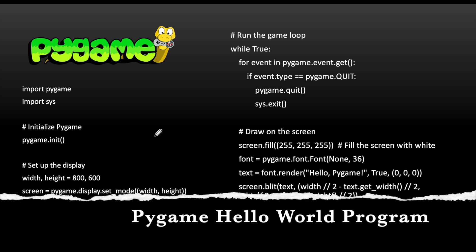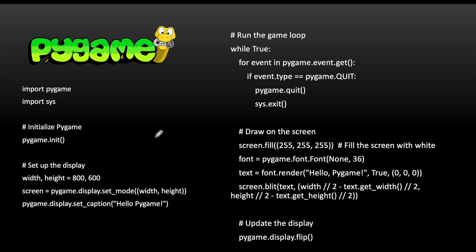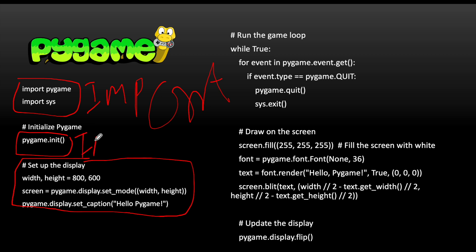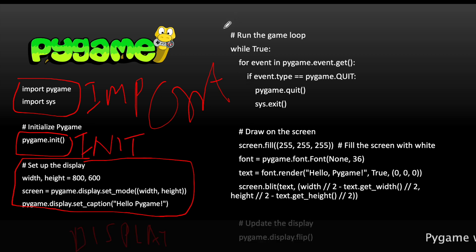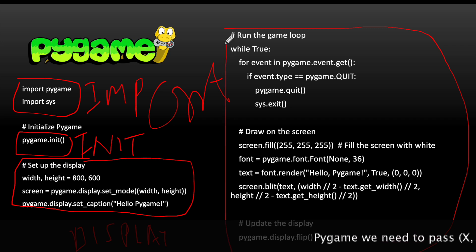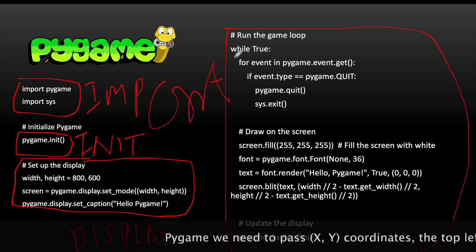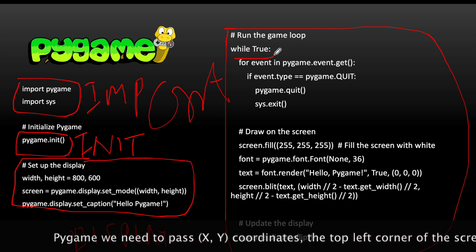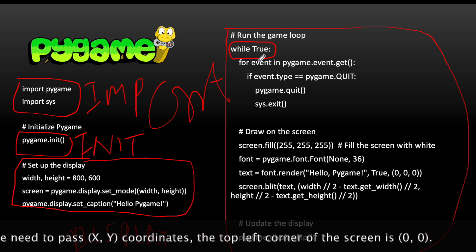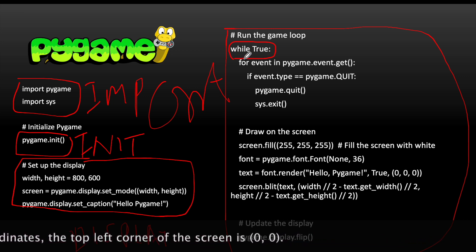Here is a simple PyGame 'Hello World' program. The first thing we do is import pygame and import the sys library. Then we initialize the game with pygame.init(). After that we do display setup. The game loop uses a while True loop, which means it runs forever — it never stops because True is always True, making this an infinite loop.